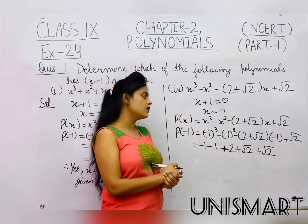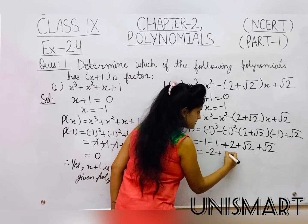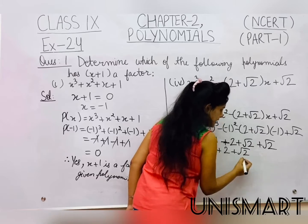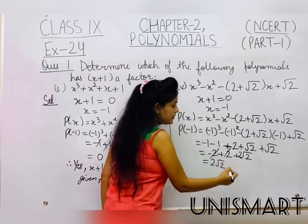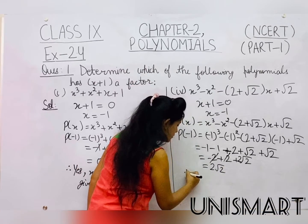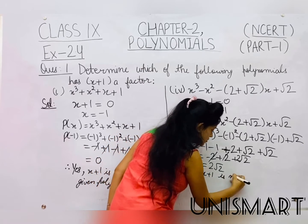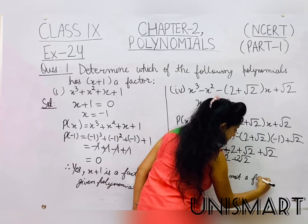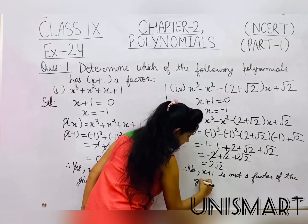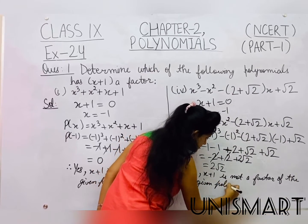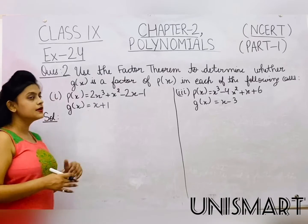Continuing to solve: -1 minus 1 is -2, plus 2, plus √2 plus √2 equals 2√2. The -2 and +2 cancel out, leaving 2√2. Since the result is not 0, x+1 is not a factor of the given polynomial.